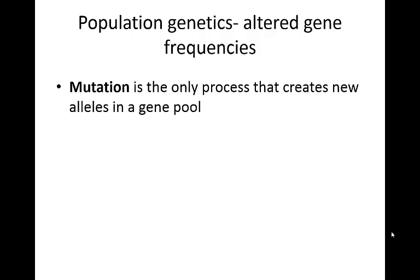When we're talking about population genetics, many times we are going to need to talk about altered gene frequencies and ways that we might come across that. Mutation is the only process by which we might have new alleles created in a particular gene pool. These mutations, as we covered previously, could be due to errors in DNA replication, movement of transposons, or exposure to different types of mutagenic chemicals.